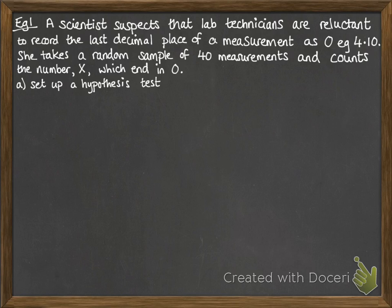We want to set up a hypothesis test. The null hypothesis is that the probability equals 0.1. If it was evenly distributed, then every digit would have an equally likely chance of coming up, so it would be one-tenth.